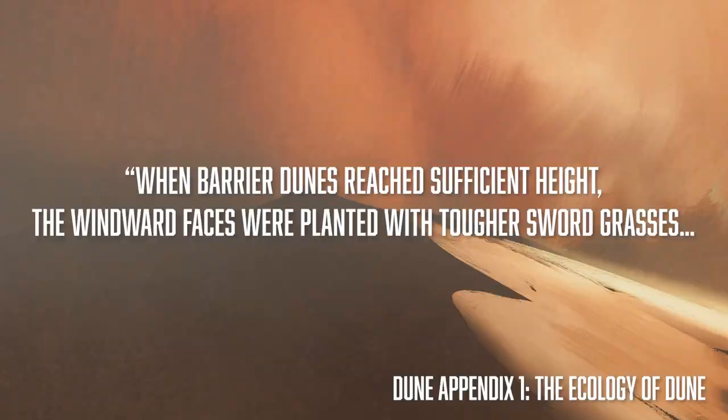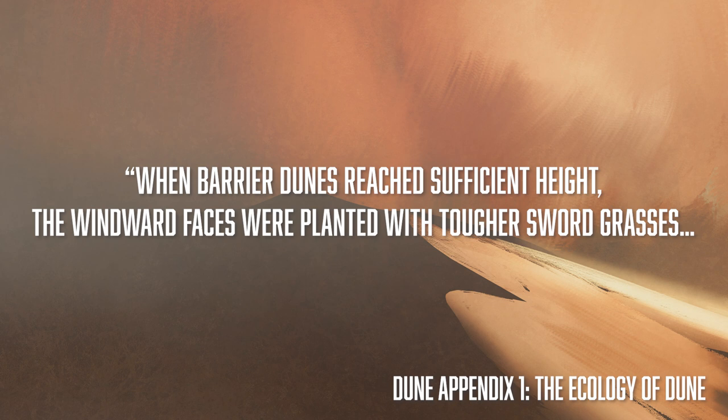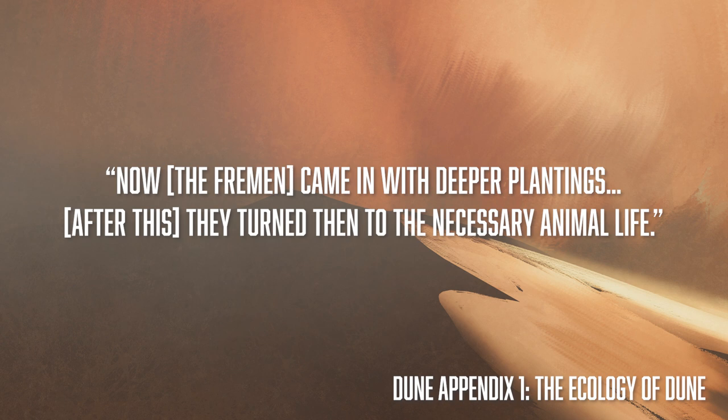Herbert reportedly got this idea from a project in Oregon in the US which sought to stabilise the sand dunes. In a similar fashion to this project, Herbert had the Fremen plant what he called poverty grass. This poverty grass was planted along the downwind sides of old dunes, where it stabilised the sand against the winds. Each stabilised area accumulated a higher windward crest after each sandstorm, which would in turn be planted with poverty grass until barrier dunes of more than 1,500 metres height were produced. When barrier dunes reached sufficient height, the windward faces were planted with tougher sward grasses. The Fremen then came in with deeper plantings, after which they turned to the necessary animal life. But doing this had unintended consequences — both for the project in Oregon and for the desert world of Arrakis — one of which being the sudden and drastic reduction of spice production, which went on to cause an economic crash of the galactic economy.